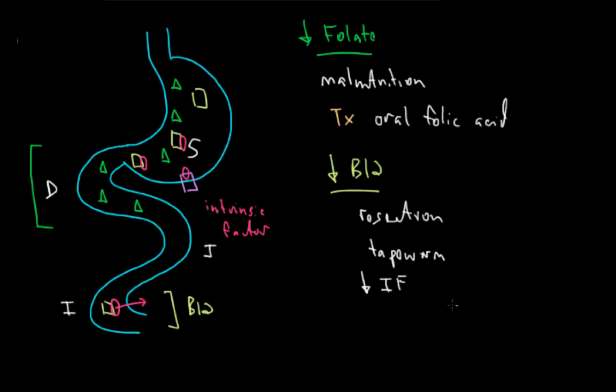Now because we have lots of B12 in our body, you usually see pernicious anemia in older individuals, because it takes a long time to develop. Fortunately, there's a really good treatment here: the addition of B12 into the diet. But unlike folate, it's done parenterally.